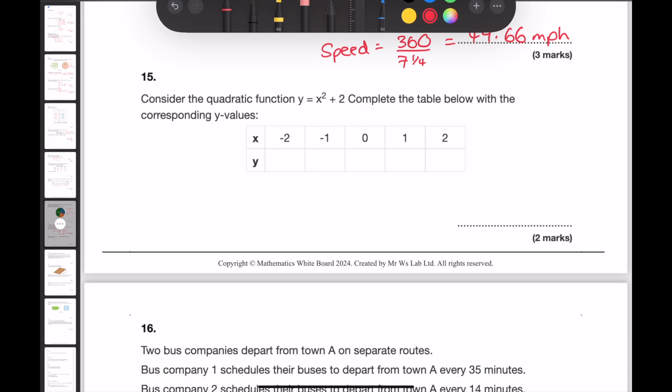Question 15. Consider the quadratic function y is equal to x squared plus 2. Complete the table below with the corresponding y values. I'm going to set up a few additional rows. The first being x squared. Negative 2 squared is 4. Negative 1 squared is 1. 0 squared is 0. And 1 squared is 1. And 2 squared is 4. If I've now got the values of x squared, in order to get y, I need to do x squared and then just simply add 2. So 4 add 2 is 6. 1 add 2 is 3. 0 add 2 is 2. 1 add 2 is 3. And 4 add 2 is 6. This is now the completed table.